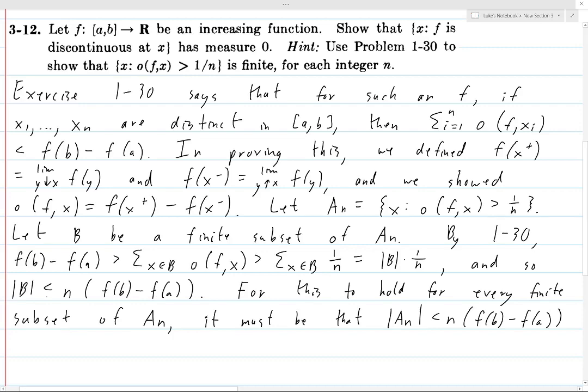And so this inequality that we proved wouldn't hold. And so it can't be the case that An is infinite. And if An is finite but it has more elements than here, then the subset B we could take could be precisely An. So it must be the case that An itself must have this bound on the number of elements it contains.